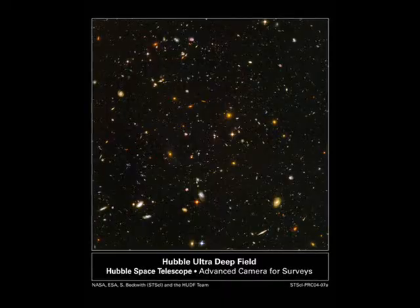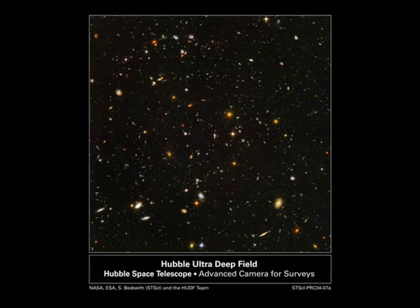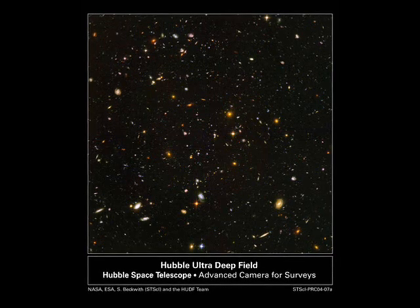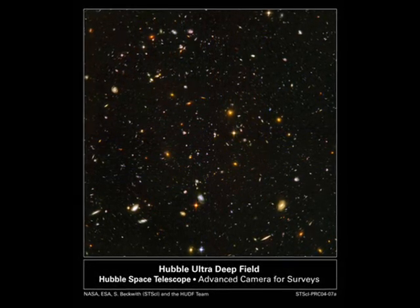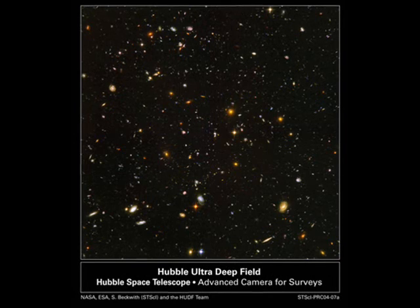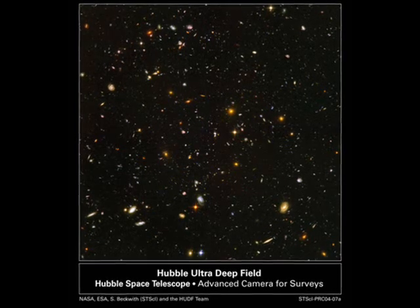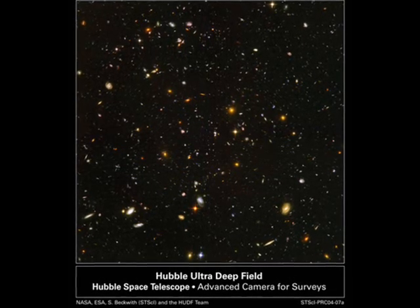So, where do we begin? Well, first, there are galaxies all over the universe. Here's just an example from the Hubble Deep Field — a tiny sliver of sky about the size of the eye on the face of a dime held at arm's length. It's full of galaxies, and the entire sky is just full of galaxies.